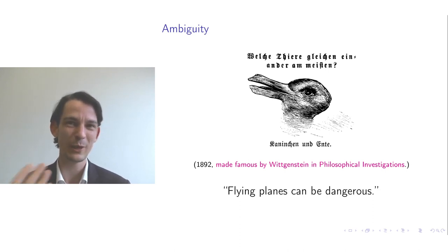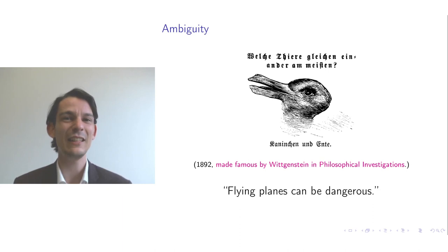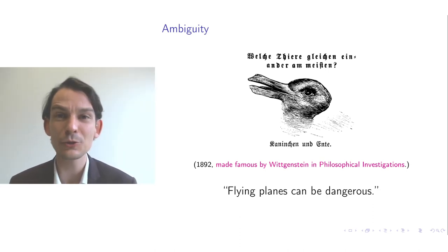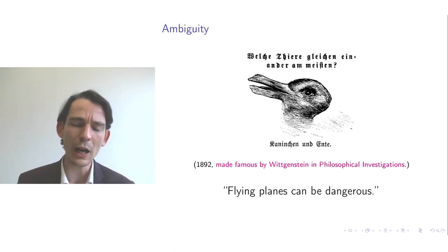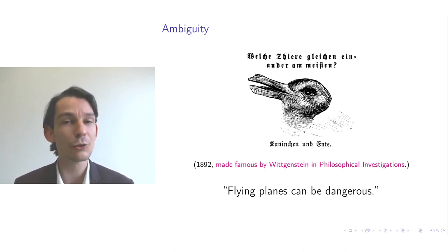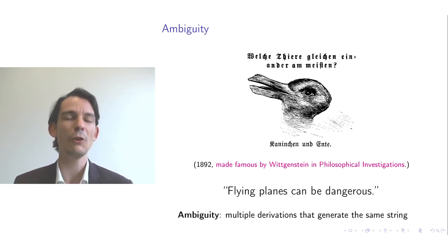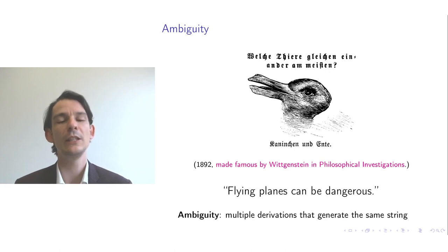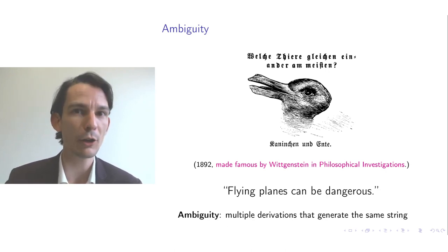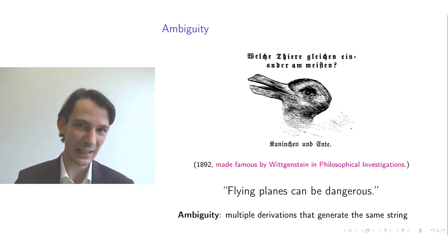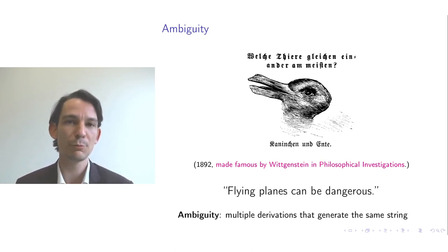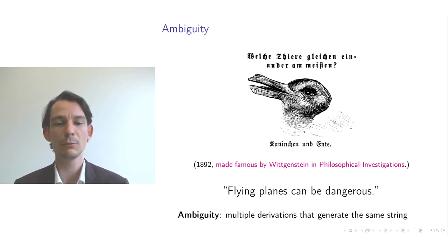In the context of context-free grammars, ambiguity means that for a particular string, if you try to solve the parsing problem and find multiple possible derivations of that string, we call that string ambiguous. A computer can only follow programmed rules and cannot determine the intended meaning on its own.